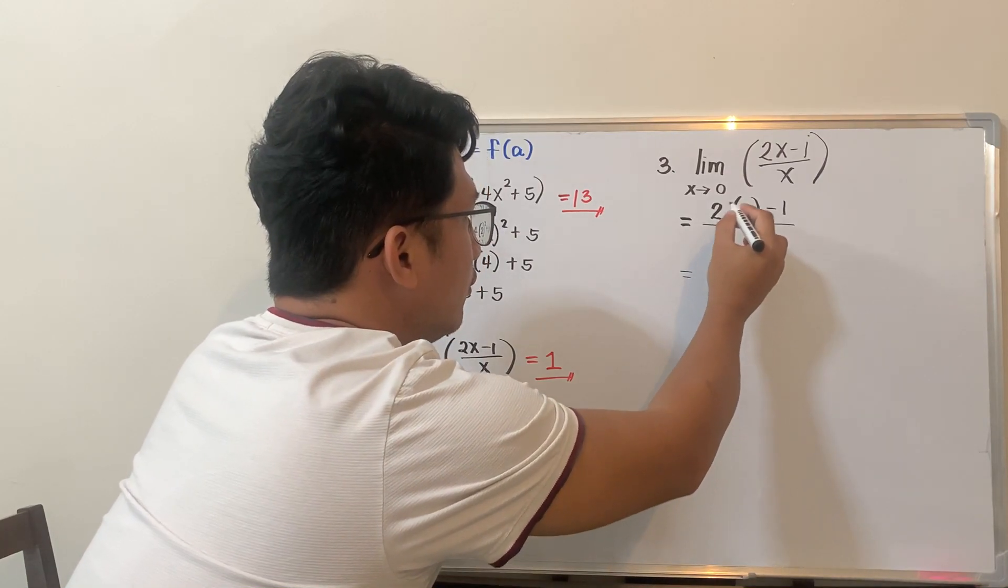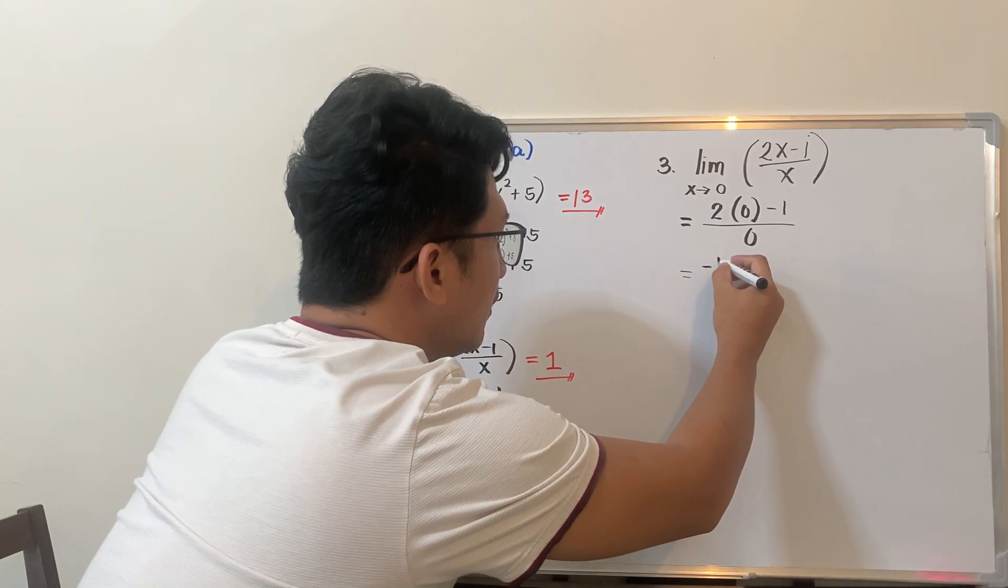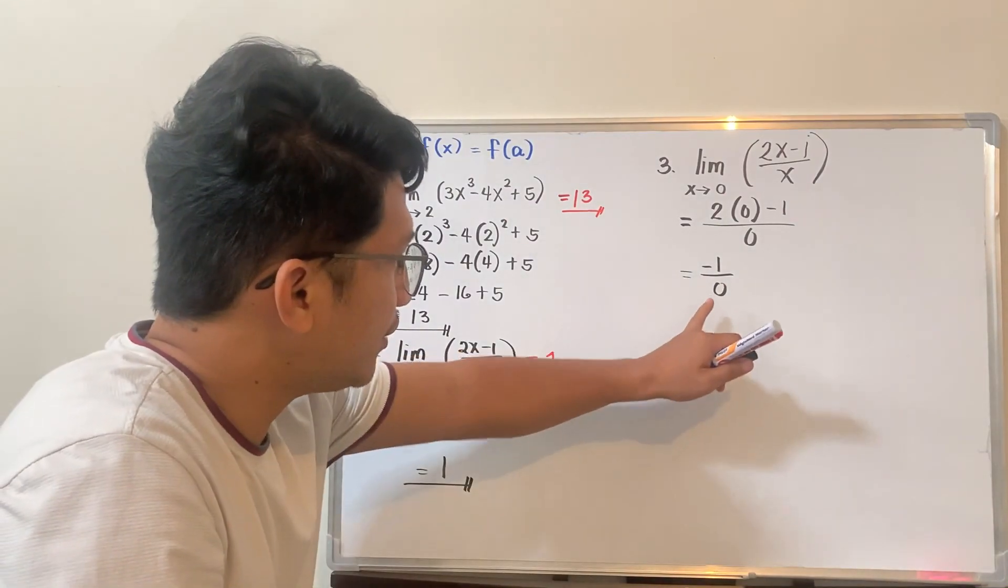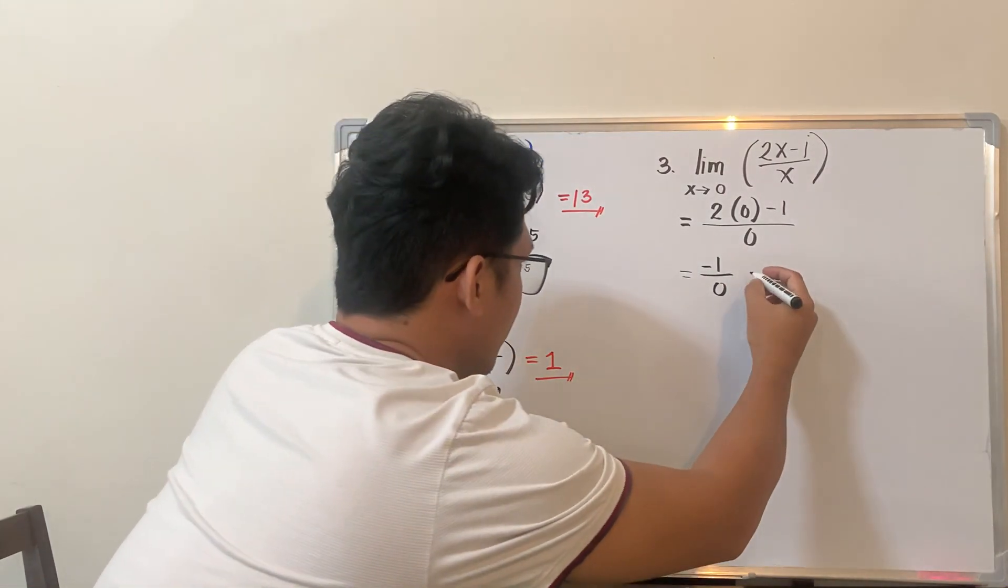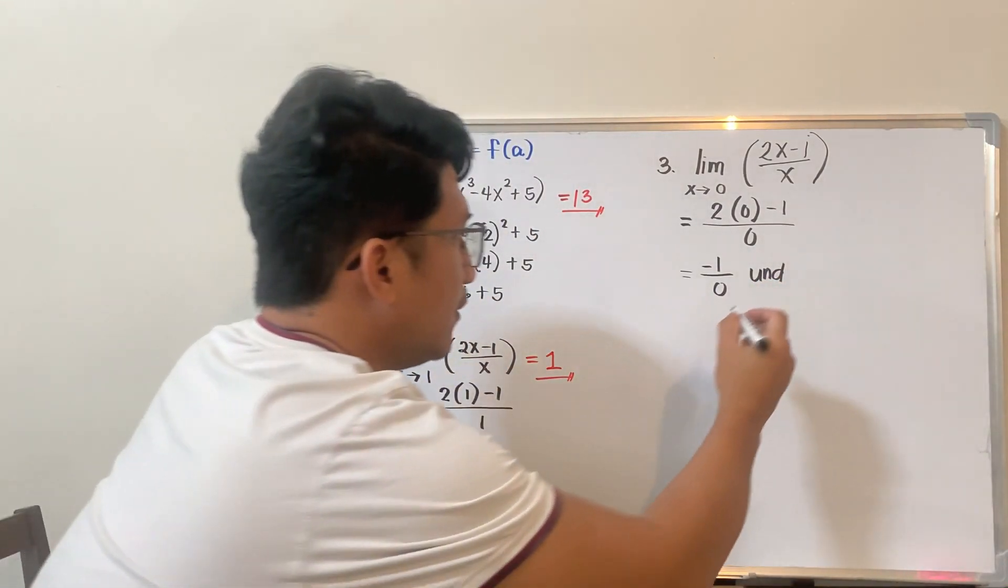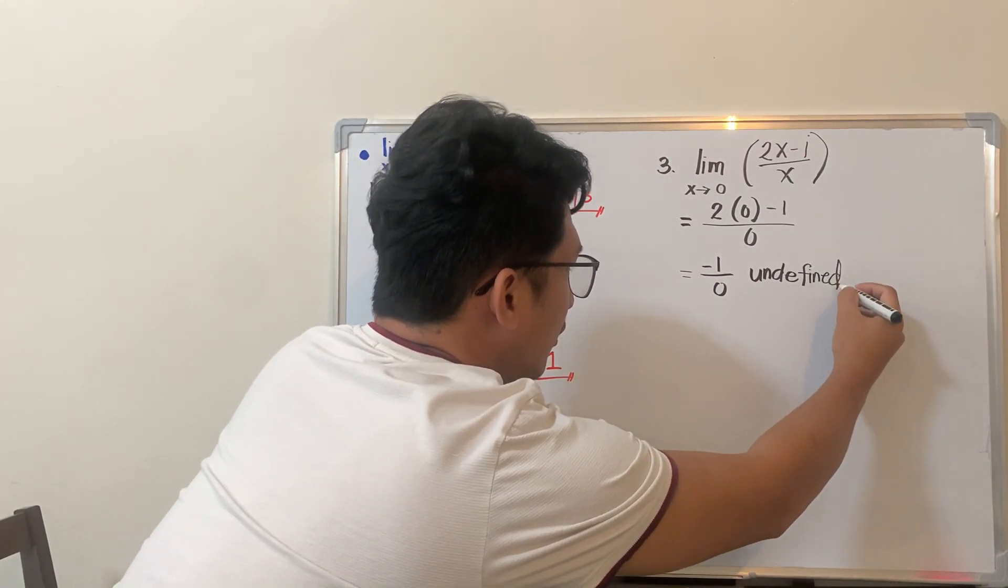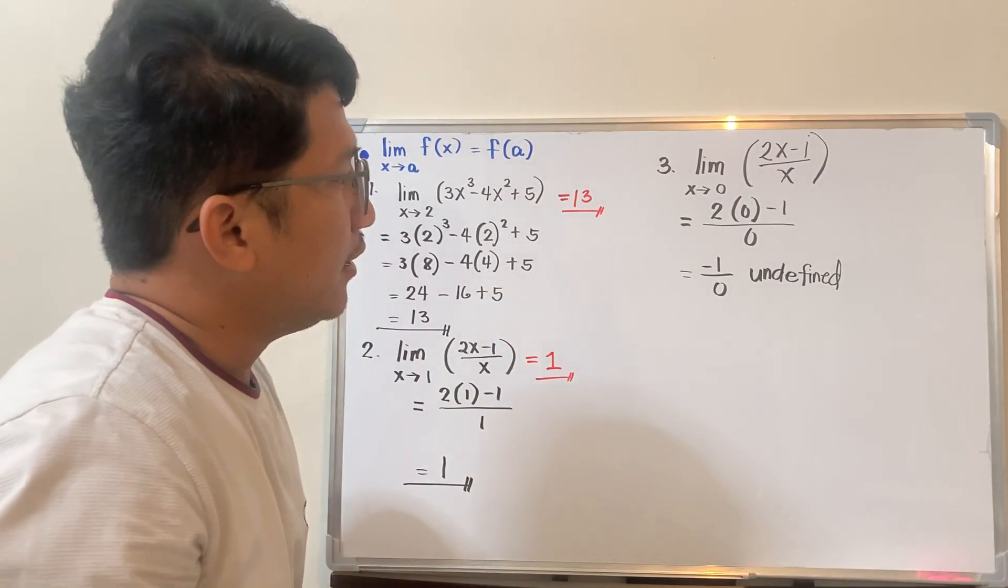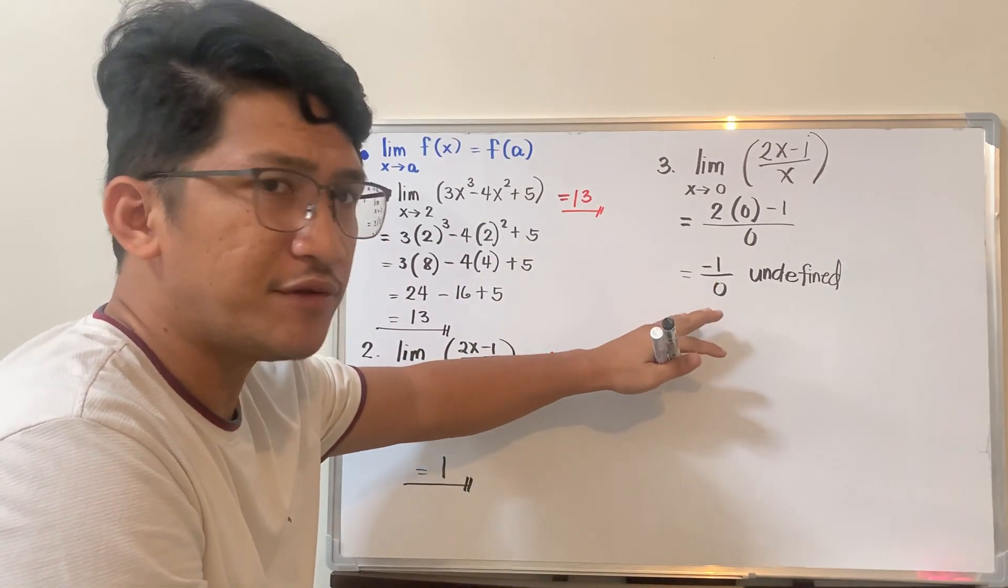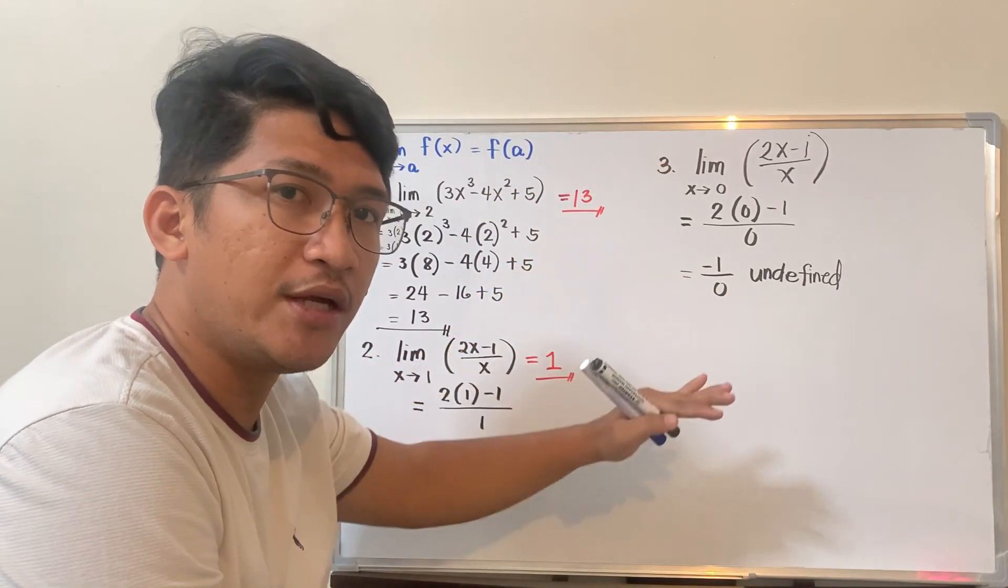Now from there, you have 2 times 0 is 0, minus 1 is negative 1, all over 0. So as you can see, this number is actually undefined. Undefined is the number. So always remember, guys, that after substituting, if the result is undefined, like this one, when you say undefined, the numerator and denominator has 0.